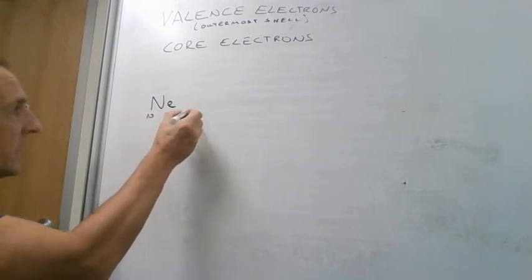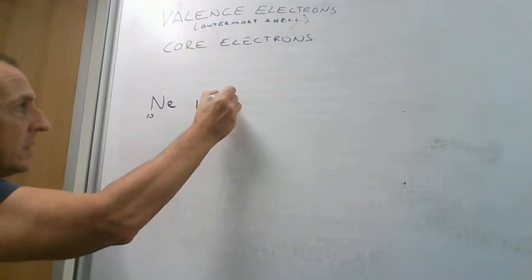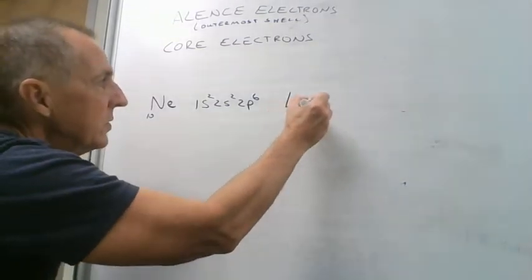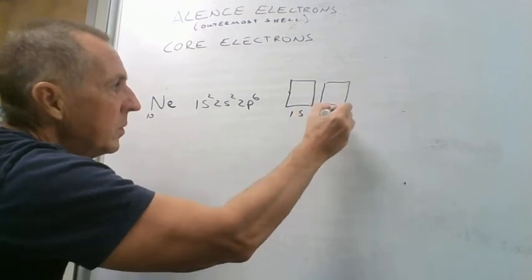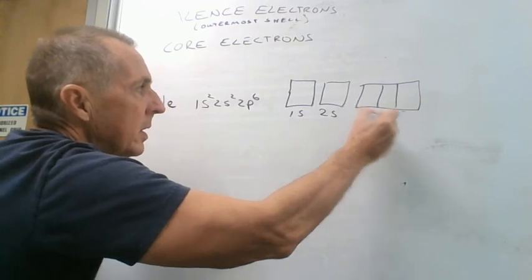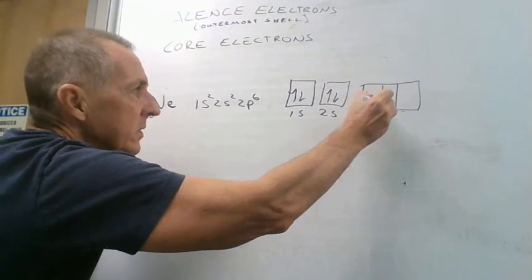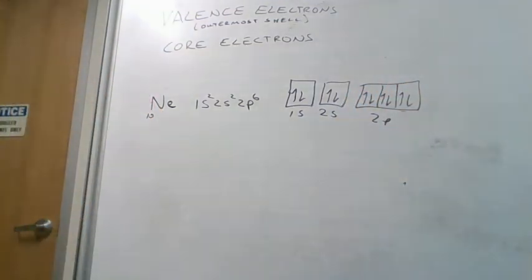And so if we have neon, then it's 1s2, 2s2, 2p6. We've filled all the electrons there. And if we do our orbital diagram, we have 1, 2, 3, 4, 5, 6, 7, 8, 9, 10 electrons. So all of our orbitals are completely filled.